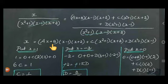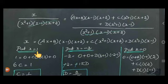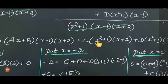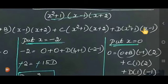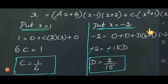To eliminate terms, substitute x = 1. When x = 1, the first term becomes 0. So: 1 = C(1²+1)(1+2) = C × 2 × 3 = 6C. Therefore, C = 1/6.